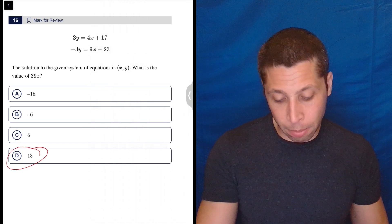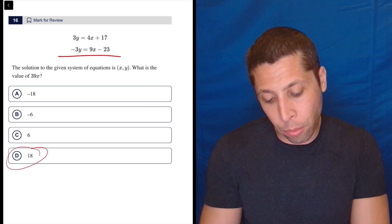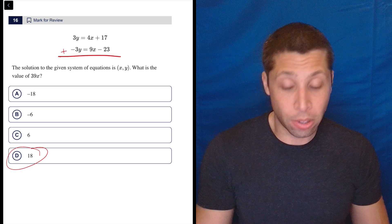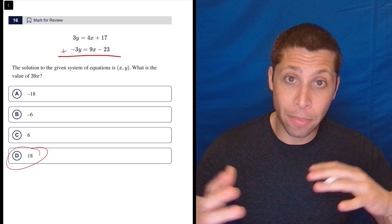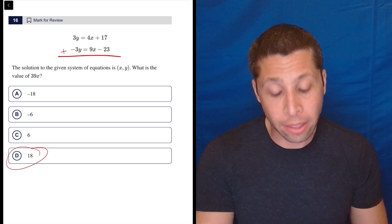But if we wanted to do it in a more traditional way, these equations are set up in a convenient way where if we add them together, the Ys will just disappear, right? So this is the elimination method. Sometimes we have to multiply or something to make it so that this happens, but they did give us a little shortcut that this works out.